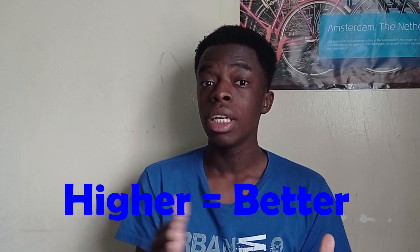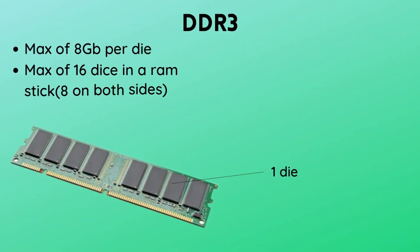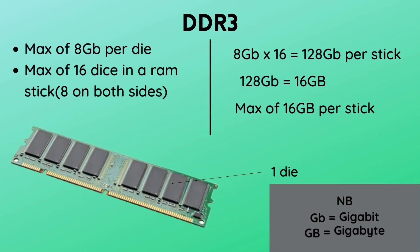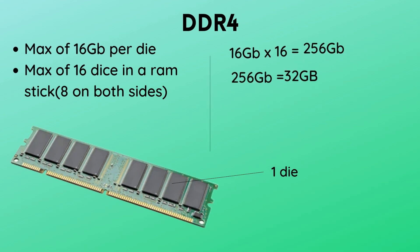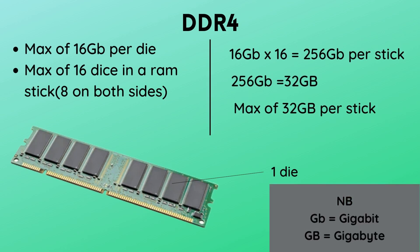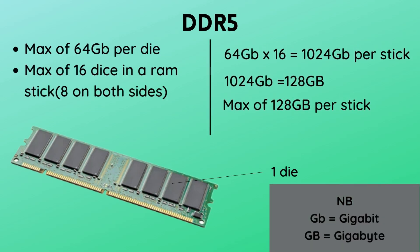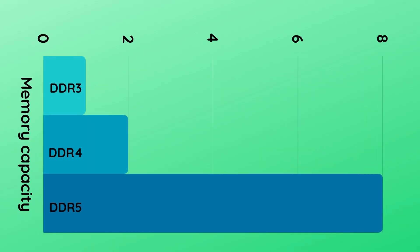Next, with memory capacity, the higher capacity is generally better. DDR3 has a maximum of 8 gigabits per die. Considering there is a maximum of 16 dies in a RAM stick, 8 multiplied by 16 gives 128 gigabits, which converts to a maximum of 16 gigabytes per DDR3 stick. With DDR4, it has up to 16 gigabits per die — multiply by 16 chips and you get 256 gigabits, which converts to 32 gigabytes, hence a maximum of 32 gigabytes per DDR4 stick. DDR5 has up to 64 gigabits per die, multiplied by 16 gives 1024 gigabits, which converts to 128 gigabytes per DDR5 stick. DDR4 has twice the capacity of DDR3, while DDR5 quadruples that of DDR4.